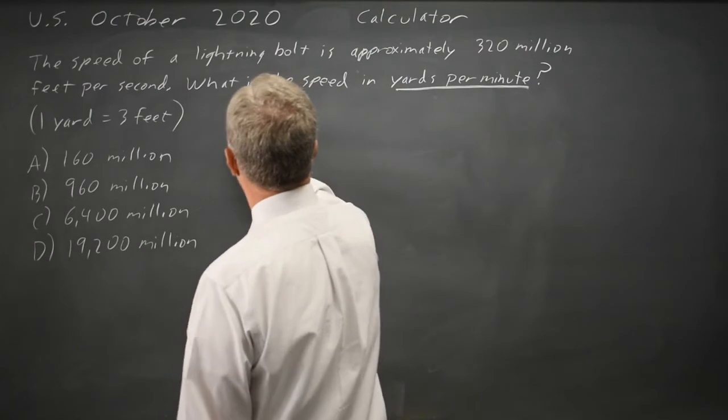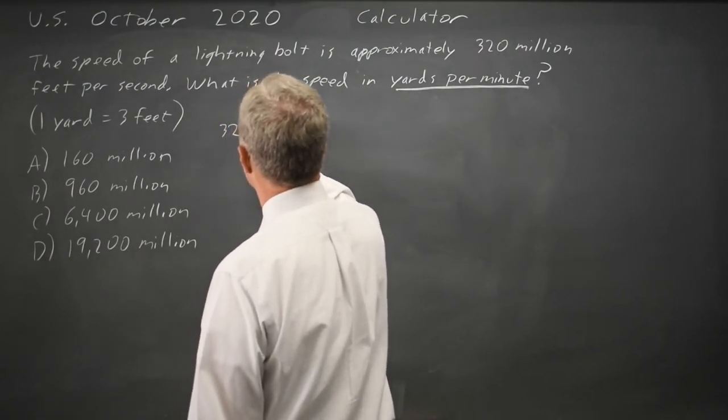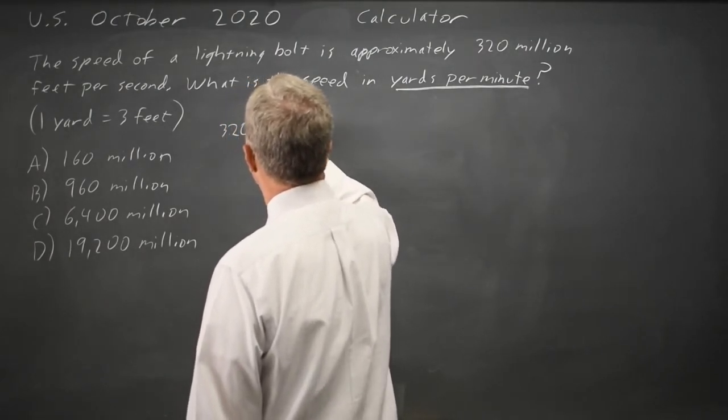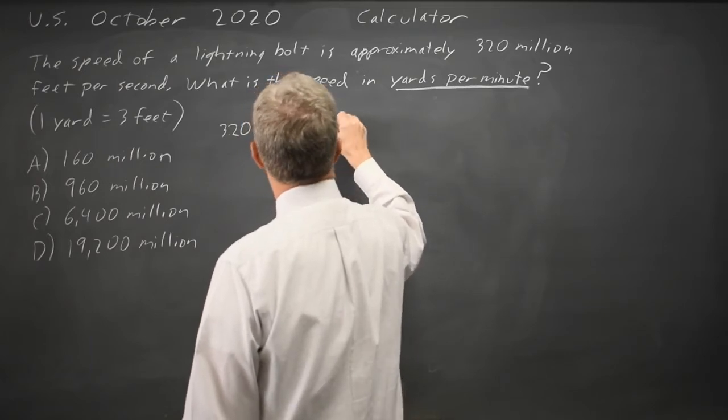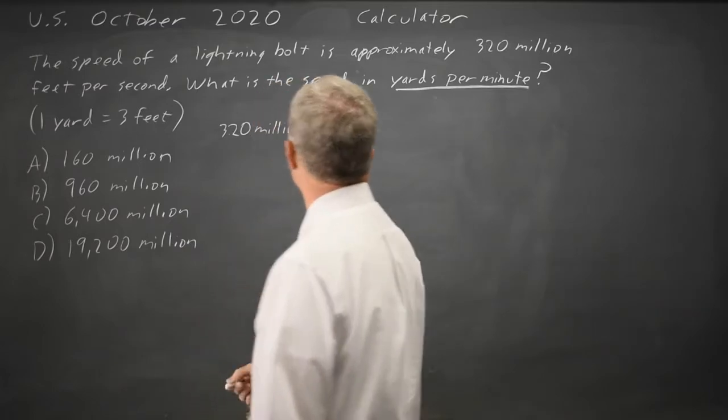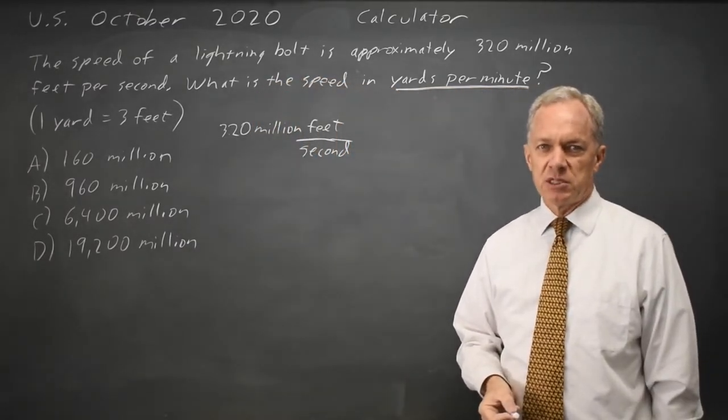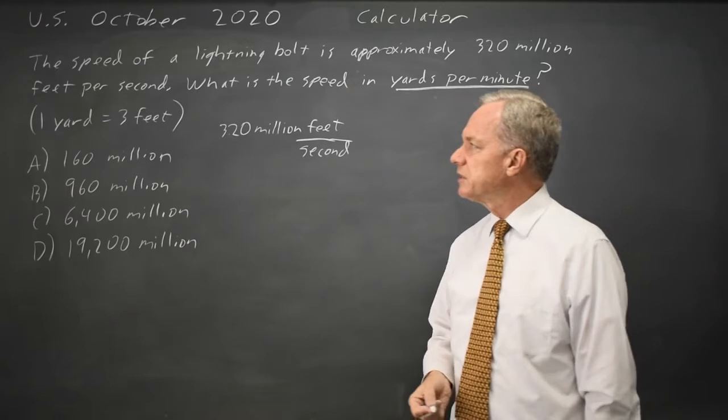I have 320 million feet per second. So I write feet in the numerator, seconds in the denominator because per means divide even with units.